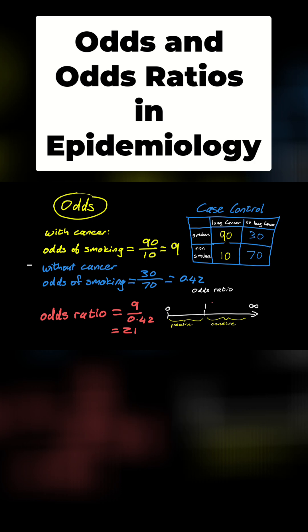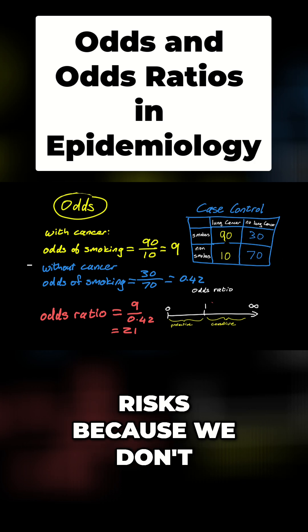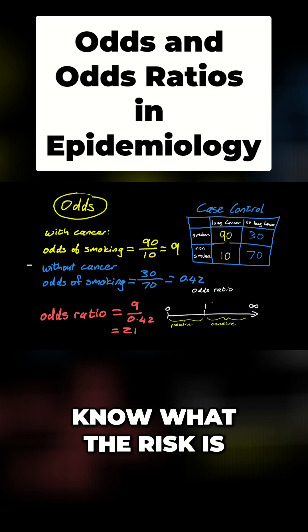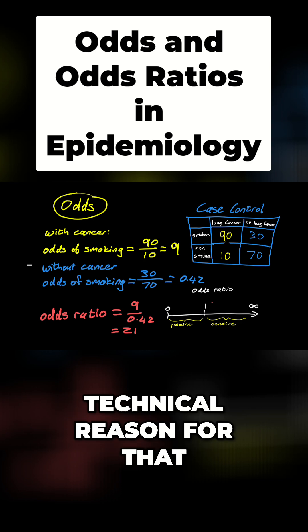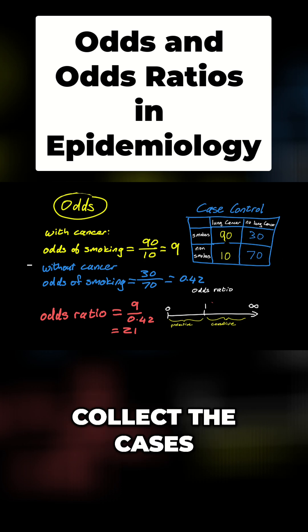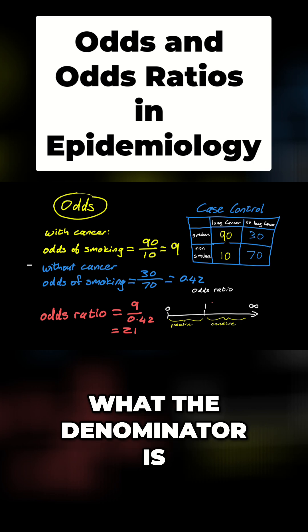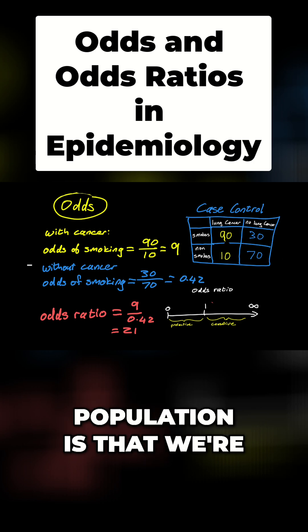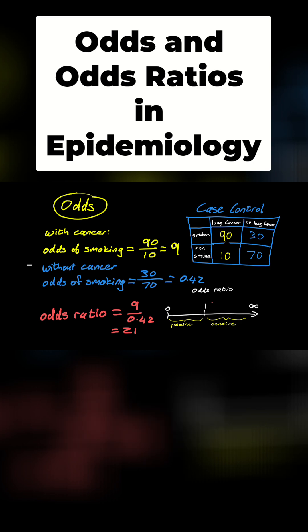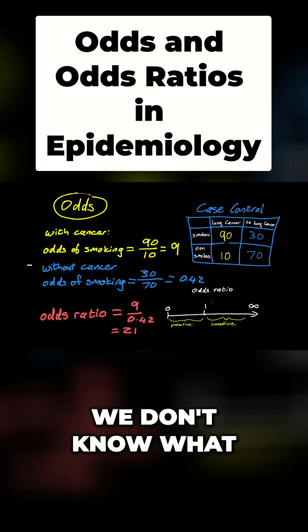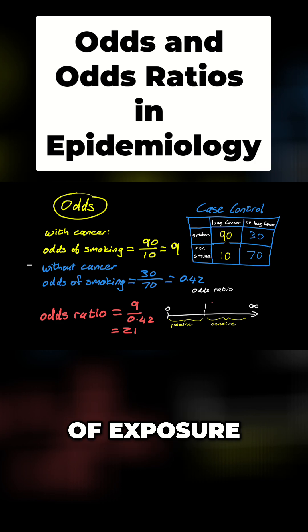Okay, so when we do a case control study, we can't really compare risks because we don't know what the risk is. If you want the technical reason, it's because when we collect the cases, we don't really know what the denominator is. We don't know what the size of the population is that we're comparing it to. Anyway, we don't know what the risk is, but what we can do is look at the odds of exposure.